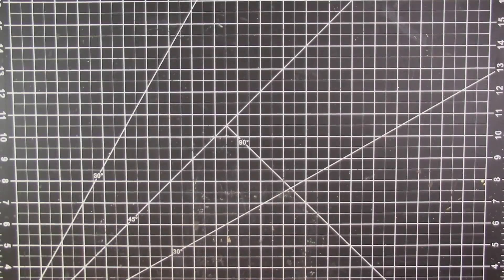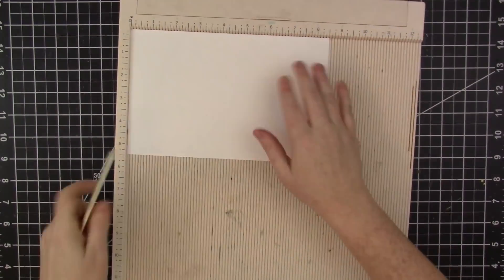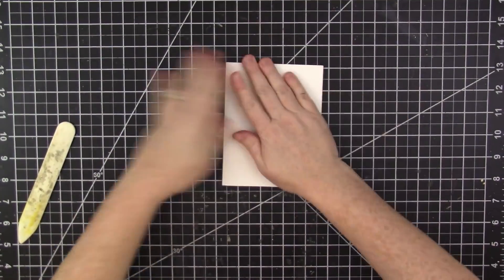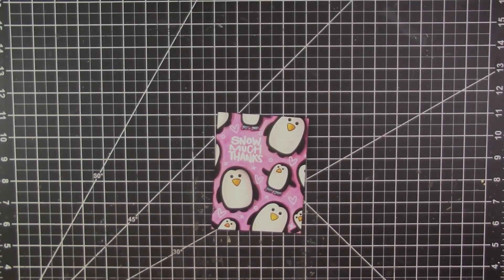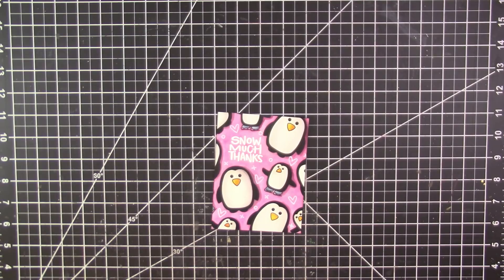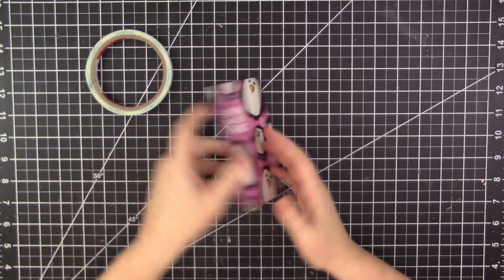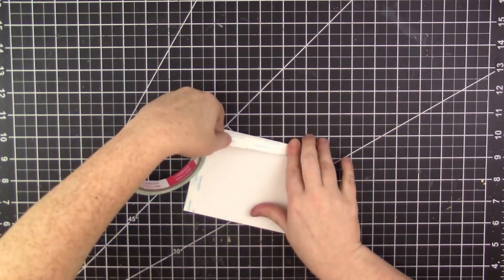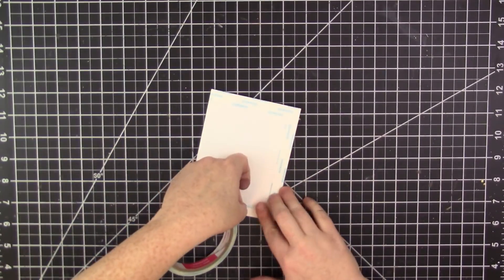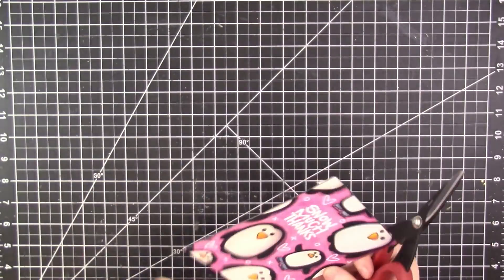So now I'm going to adhere the panel to a card base of Neenah solar white cardstock. When I first bought this cardstock, I took the entire stack to my local FedEx store and they cut down the 8 and a half by 11 inch sheets right in half. So now I have this big stack of flat card bases that I can just score down the middle with my scoreboard.